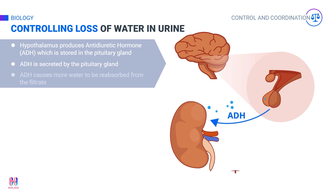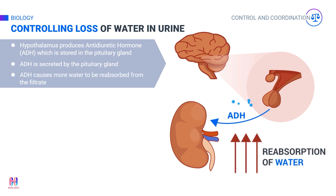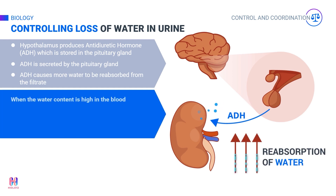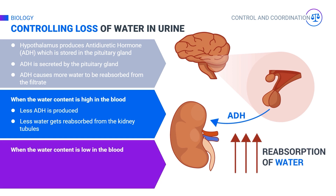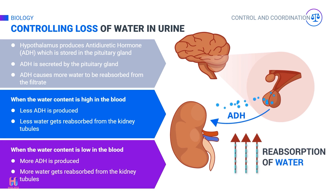When the water content is high in the blood and the body needs to lose some of it, less ADH is produced, and thus less reabsorption occurs, excreting excess water in the urine. On the contrary, when the amount of water is low in the blood, production of ADH increases and more water is reabsorbed back into the blood. This type of system is called a negative feedback mechanism, and it keeps the blood plasma concentration fairly constant.